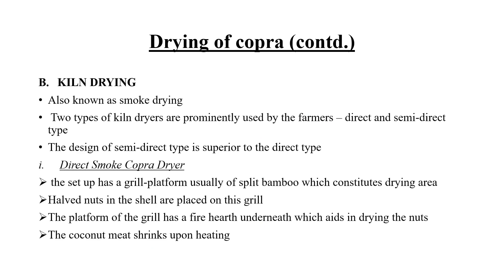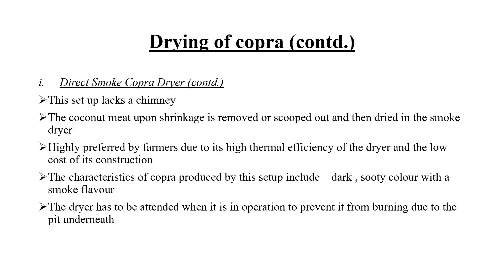Kiln drying is also known as smoke drying. Usually two types of dryers are used: the direct smoke copra dryer and the semi-direct smoke copra dryer. In the direct smoke copra dryer, the copra is kept in direct contact with the furnace. However, in the semi-direct smoke copra dryer, there is a distance between the furnace and the drying bed. The smoke copra dryer lacks a chimney and has to be attended during operation to prevent burning due to the pit underneath.